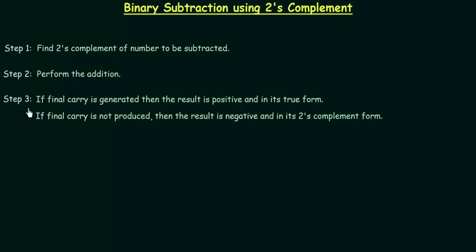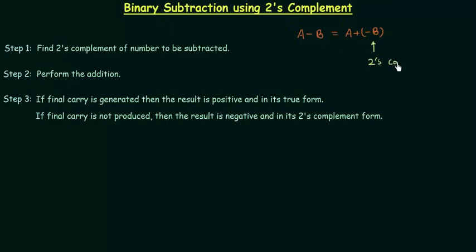Now we will move to the three steps involved in this method. Let's say we want to subtract B from A, so we will write A minus B. This is direct subtraction. Or I can write A plus of minus B. This minus B is nothing but the two's complement of B, because we know that the two's complement of a number is the negative of that number.